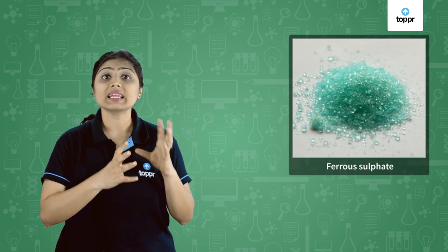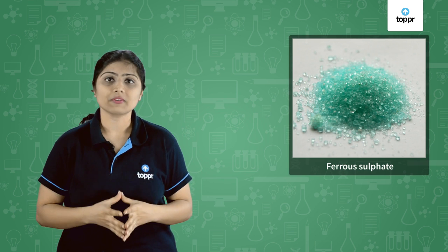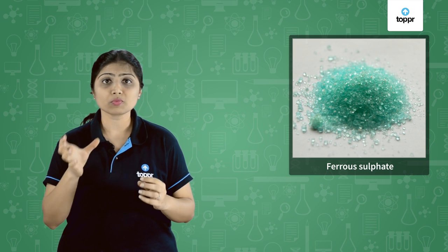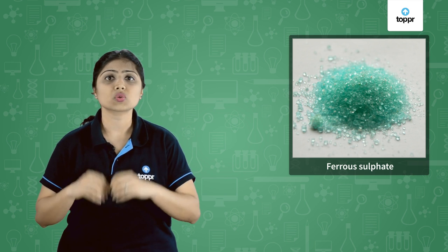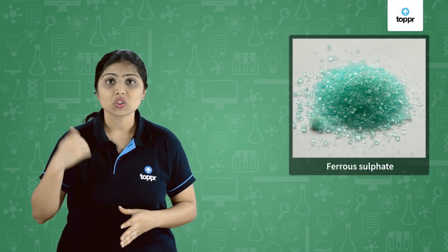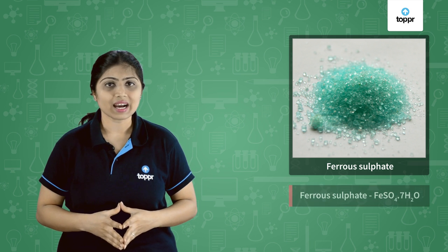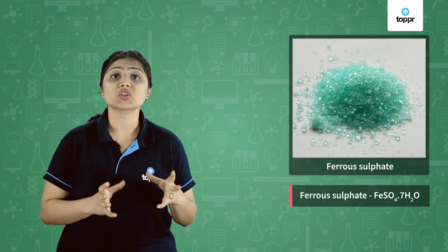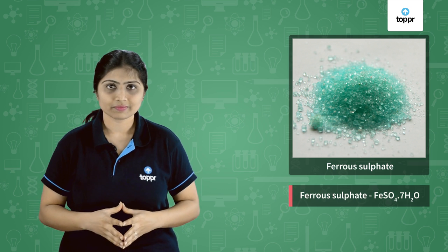Similarly, the green coloured crystals of ferrous sulphate are green because each molecule of ferrous sulphate is attached to seven water molecules. So, the formula of ferrous sulphate crystals is FeSO4·7H2O, which are green in colour.